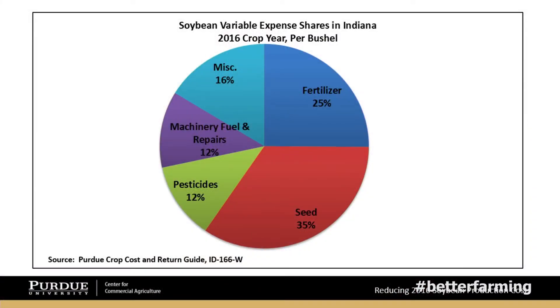Seed costs have increased, and perhaps decisions on seeding rates and plant populations haven't been given enough thought. Is this a year to sit down and ask whether you need to make some changes? Looking at a chart of variable production costs for soybeans in Indiana, the largest cost category is seed — 35% of variable expenses go to seed, 25% to fertilizer, 12% to pesticide. If we can make some improvement to reduce our seed cost per bushel, that can have a pretty positive impact on our net return.